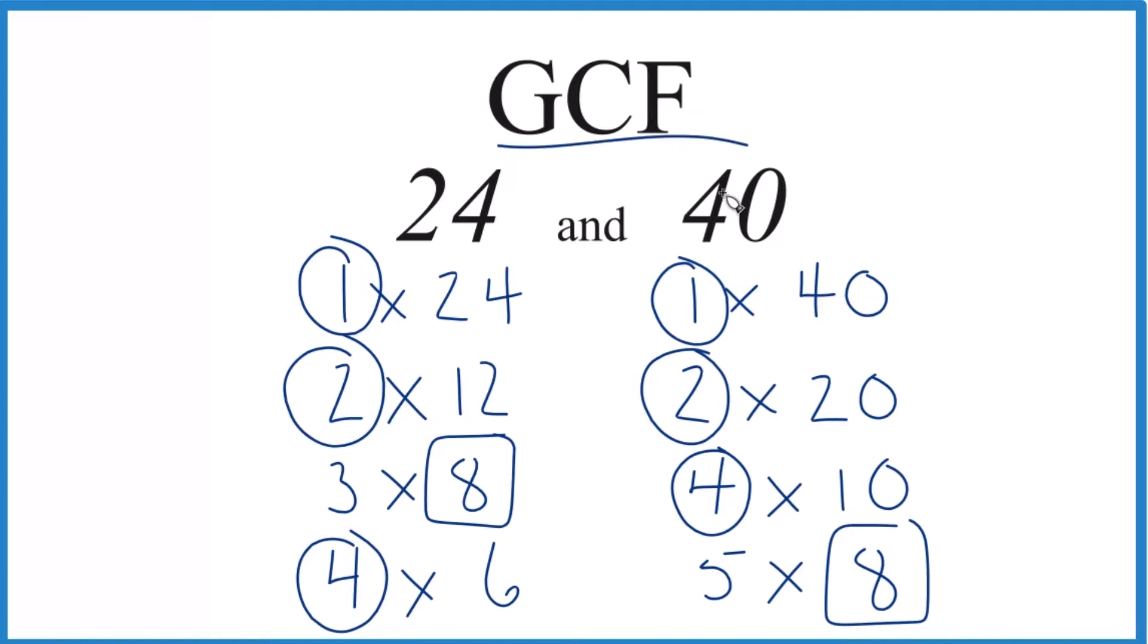Our GCF. So in answer to our question, the GCF, or the greatest common factor for 24 and 40, that's going to be 8.